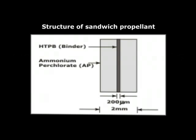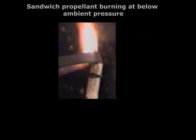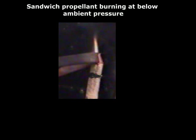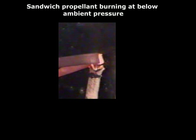Solid propellants are a mix of solid oxidizer like ammonium perchlorate and fuel aluminum powder at high solid loading in a binder matrix of a fuel like HTPB or others. A model of solid propellant is a sandwich propellant. The burn rate of a model sandwich propellant is examined at low pressures. These burn rates vary from one to two millimeters per second.